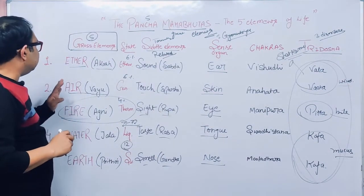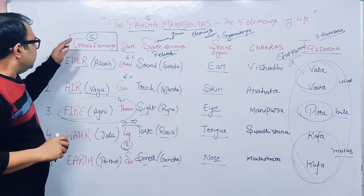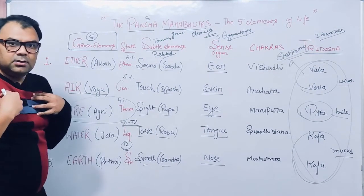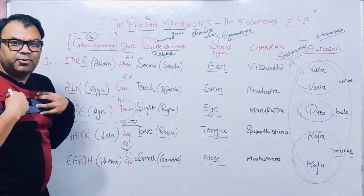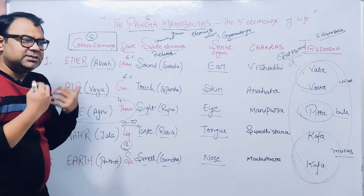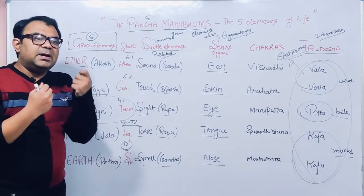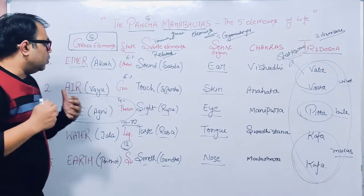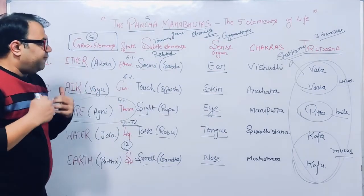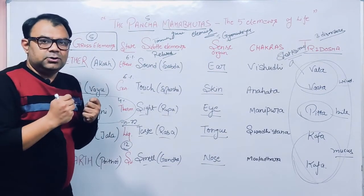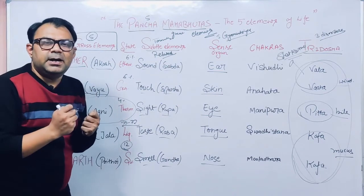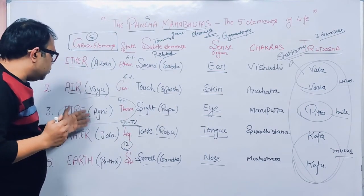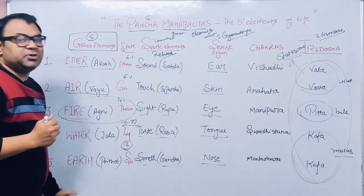So, these are the five elements. This body is made up of them, and we can consider this body as nothing but a unit of the whole universe. This body is made up of the five elements: Akash, Vayu, Agni, Jala, and Prithvi.